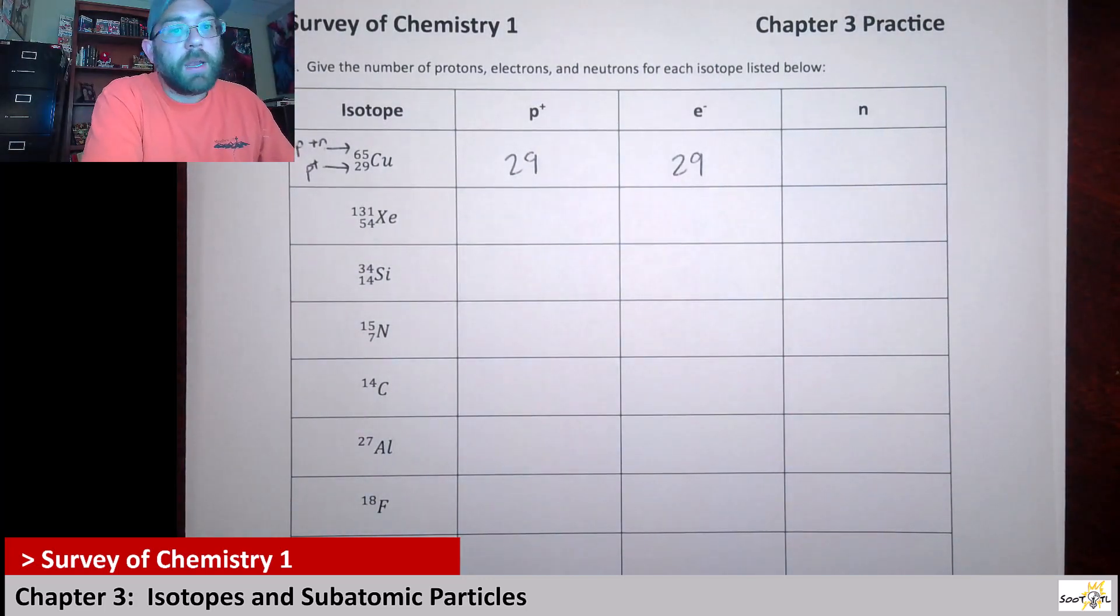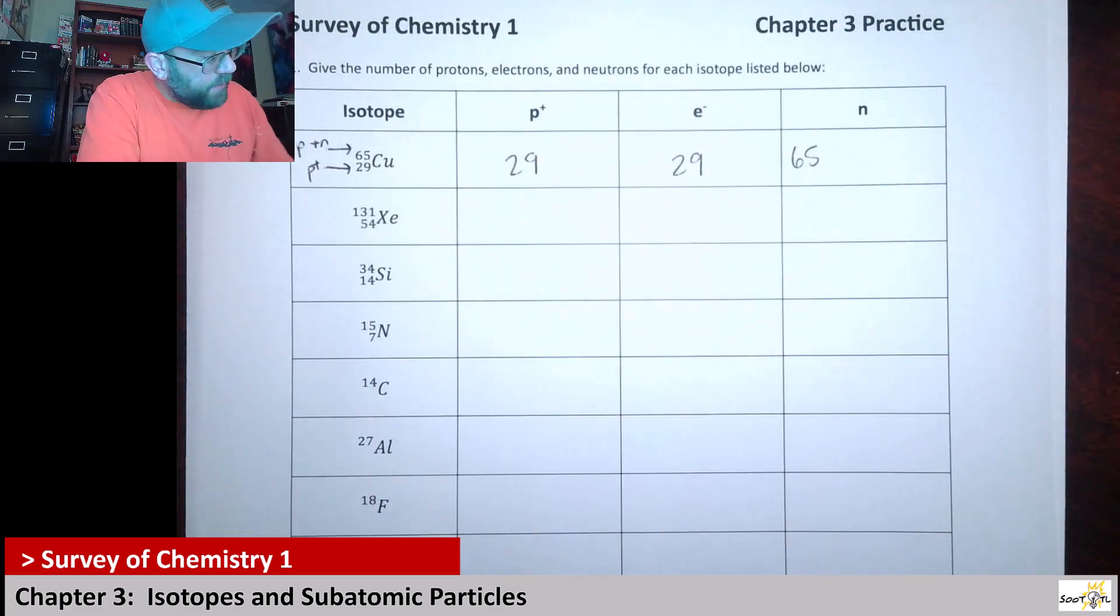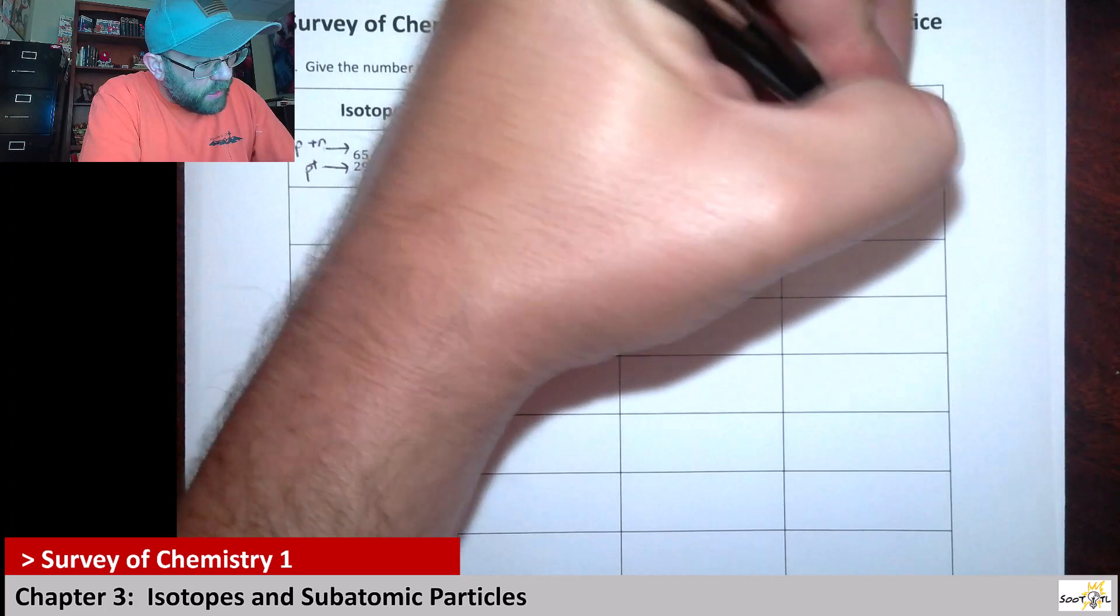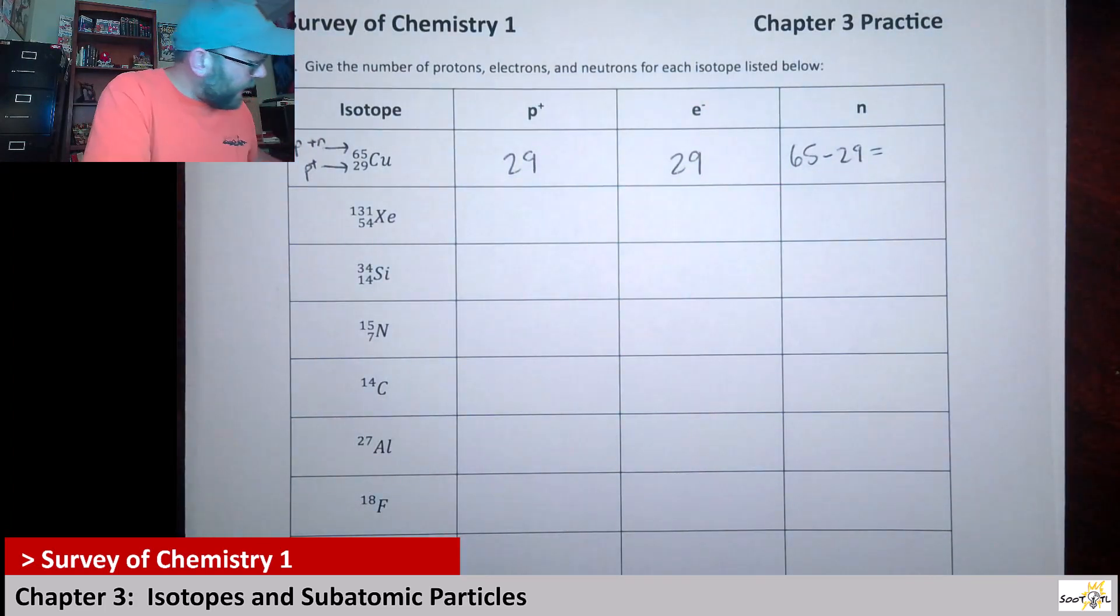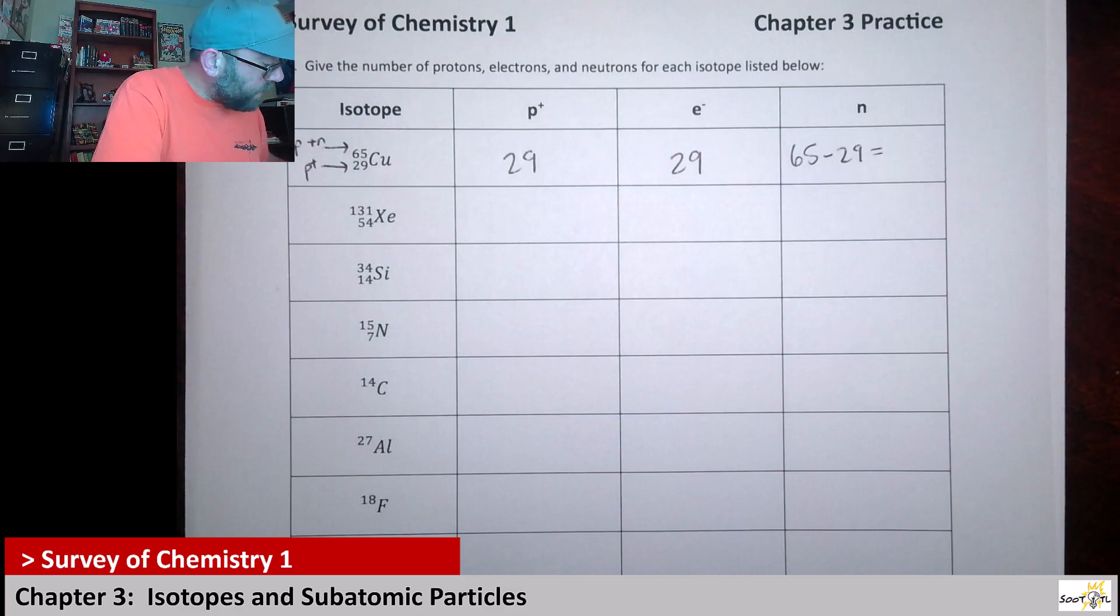That means this guy has 29 protons and 29 electrons because it's neutral. Now, to get the neutron, we're going to have to say 65 minus 29, and I got 36.